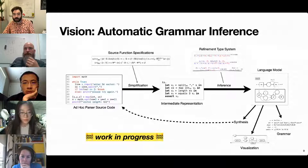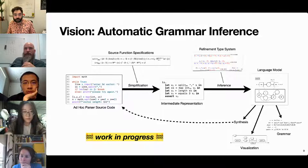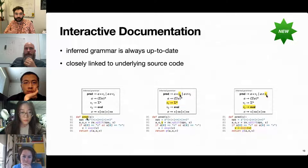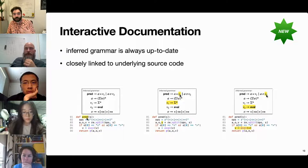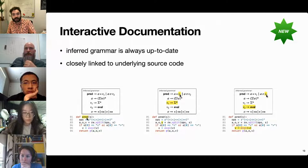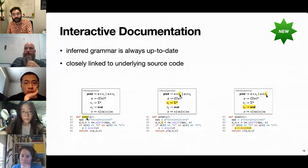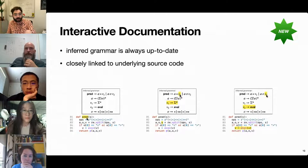If we have this automatic grammar inference system, it enables a whole range of new applications. First, we could use inferred grammars as interactive documentation that is always up to date and closely linked to the underlying source code. Imagine an IDE plugin that shows you the implicit input grammar for some function when you hover over the function definition, and lets you drill down into individual production rules or non-terminals and trace them back to the source code.